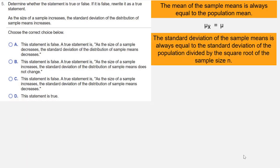And the standard deviation of the sample means is always equal to the standard deviation of the population divided by the square root of the sample size. So σ_x̄ = σ/√n.